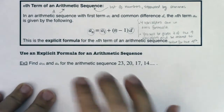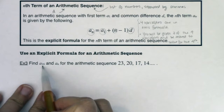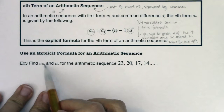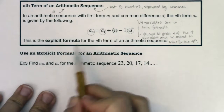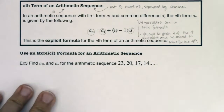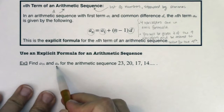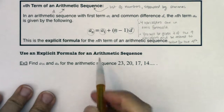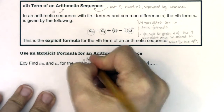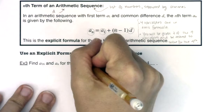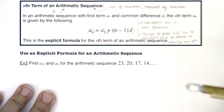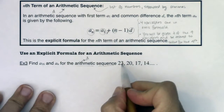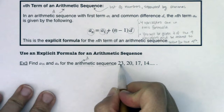In example three, I specifically want a_16 and a_n for this arithmetic sequence. When I see arithmetic, I know there's a d value. When I hear sequence, I say list of numbers. Just taking a look at this, we can spot d. How do you get from 23 to 20? How do you get from 20 to 17? I can see that d is equal to negative 3.